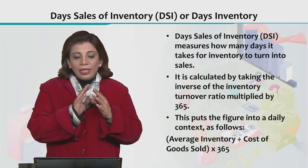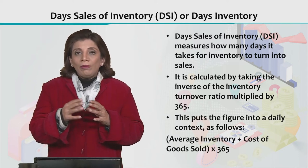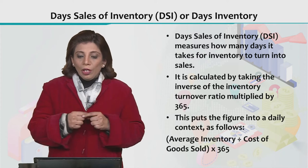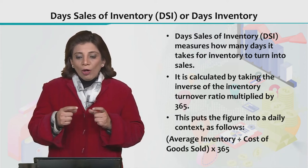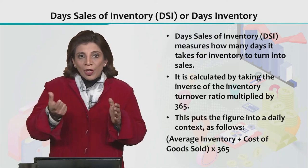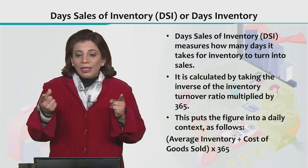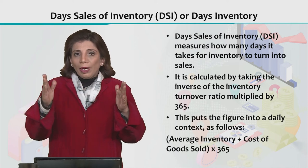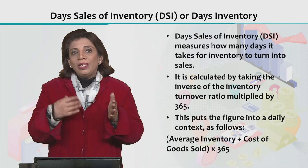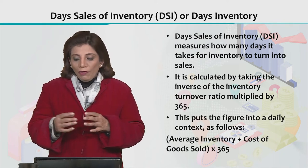Another related concept is Days Sales of Inventory, abbreviated as DSI, or simply Days Inventory. It measures how many days it takes for inventory to turn into sales. If the span is longer, it means the company is inefficient; if the span is shorter, it means the company is efficient. We consider 365 days in order to calculate days inventory.